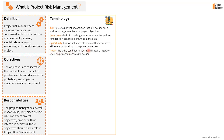A threat is a negative condition — a risk that will have a negative effect on project objectives if it occurs. So any identified risk in your project can be an opportunity or a threat. The probability of a risk is the likelihood that a risk will occur, usually represented as a percentage, like 70% or 60%. The impact is the effect on the project if the risk occurs — what will be the effect on at least one project objective? Think of probability and impact like the first and last name of any identified risk.